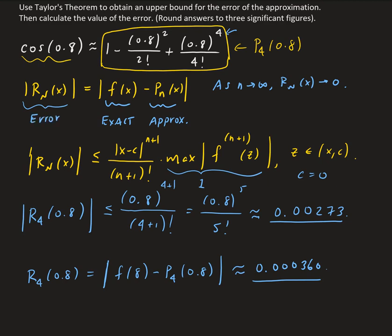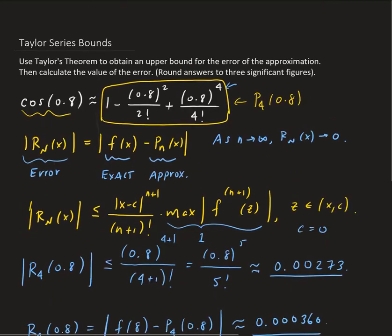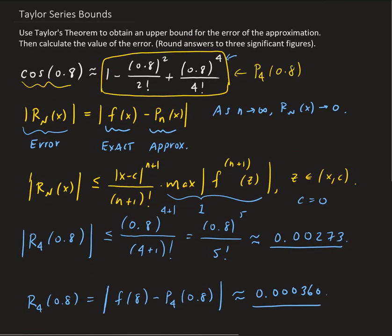That's basically how you solve this. You can use these results to come up with upper and lower bounds for the function — in this case, for cosine of 0.8.